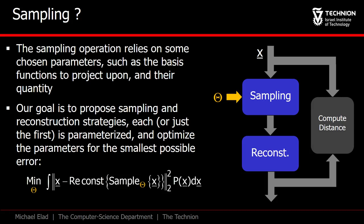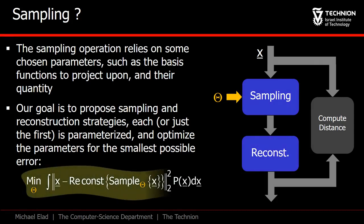Such an optimization may follow this error expression, in which again, P of x plays a central role. All that this expression says is the expected sampling and reconstruction error over the distribution of x should be minimized.